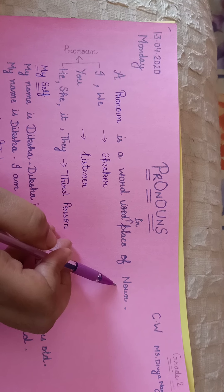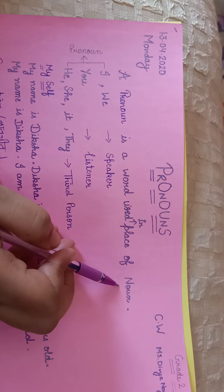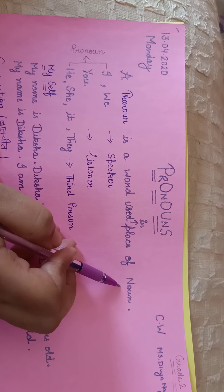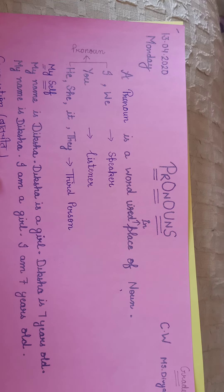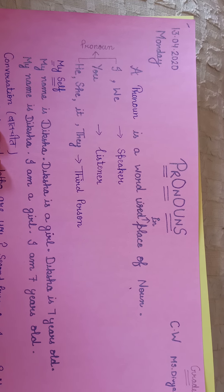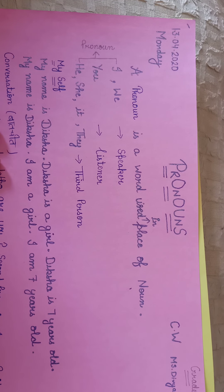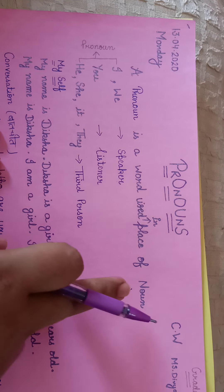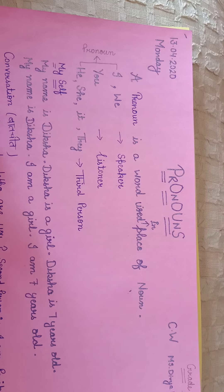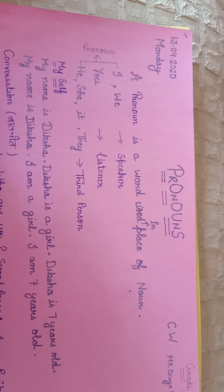For example, today mama gives you a dairy milk chocolate. And after a few minutes, mama again gives you dairy milk chocolate. But this is not healthy for your teeth. So mama gives you milk in the place of dairy milk chocolate. So, noun is dairy milk chocolate, and pronoun is milk. We have replaced the noun with a pronoun.